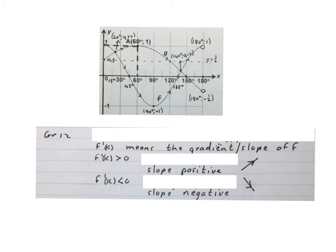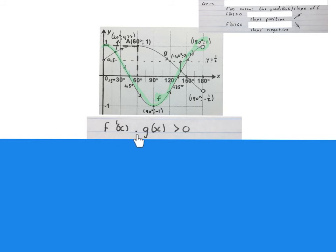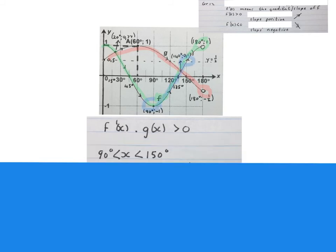The last part is for Grade 12s only. f'(x) means the gradient or slope of f. If f'(x) is bigger than zero the slope is positive — it's going up. If f'(x) is smaller than zero the slope is negative — it's going down. The question asks where is f'(x) times g(x) positive. We need a positive gradient and a positive graph, or a negative gradient with a negative graph. The answer is x is bigger than 90 degrees and x is smaller than 150 degrees — in that interval the green graph has a positive gradient going up while the g graph is above the x-axis. Also write it in interval notation.